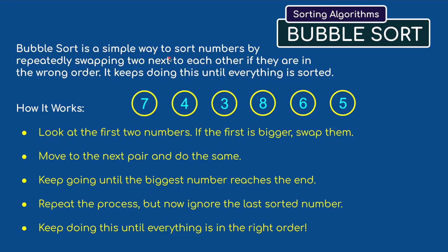So what is bubble sort? Well it's a simple way of sorting numbers by repeatedly swapping two next to each other if they are in the wrong order. It keeps doing this until everything is sorted. So it's taking pairs - for example the seven and the four are in the wrong order so it would swap them round and then move on to the next pair.